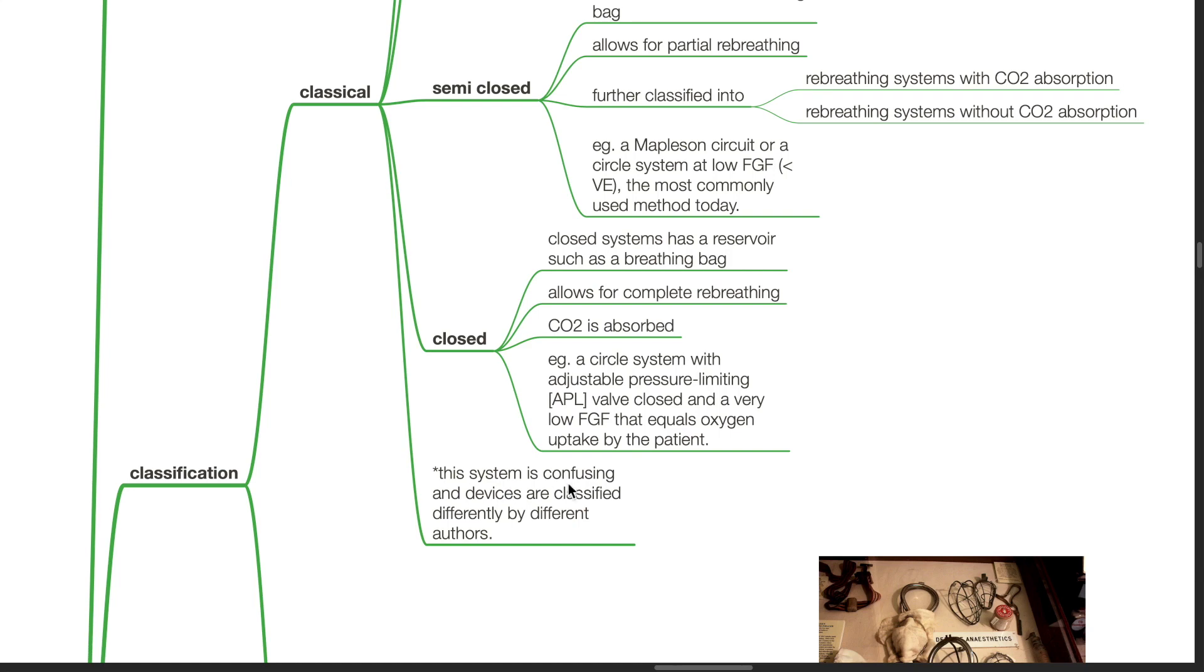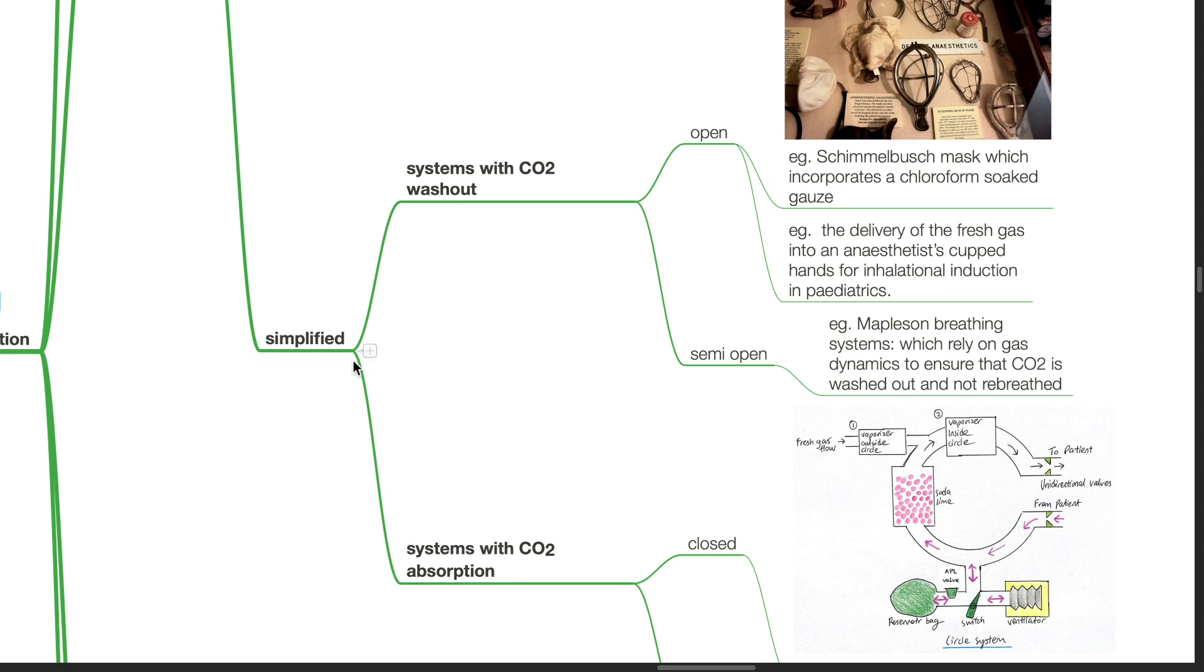This classification system is confusing and devices are classified differently by different authors. A simplified classification of breathing systems: they can be classified as systems with CO2 washout and systems with CO2 absorption.